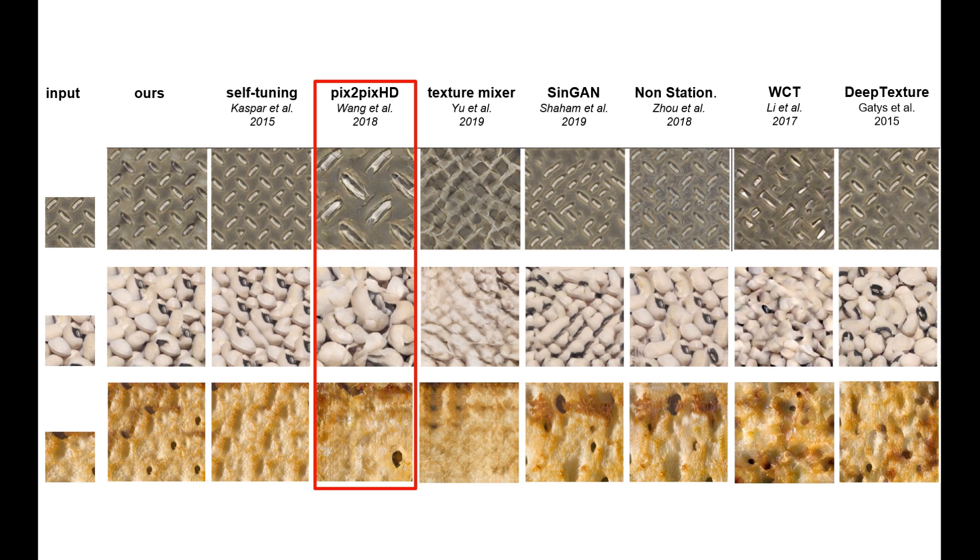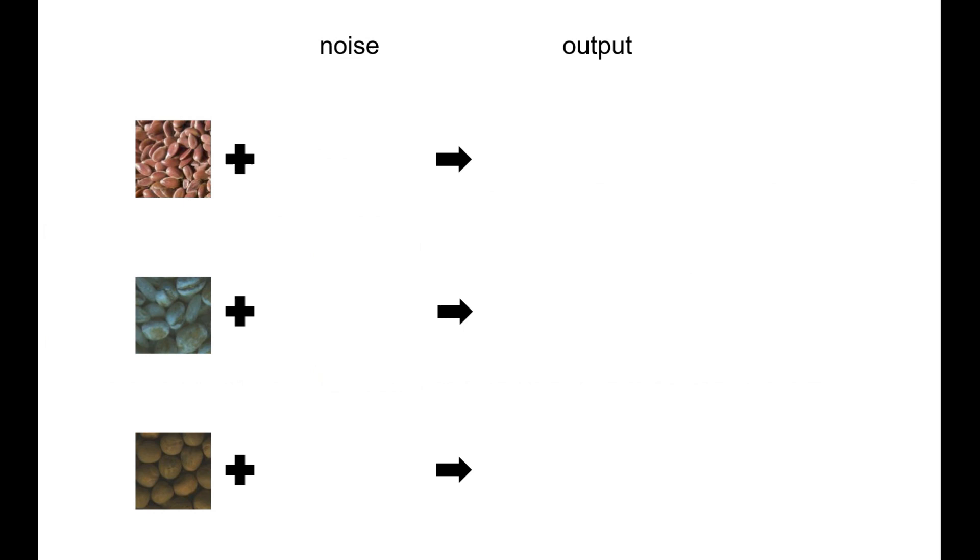On the other hand, we found that the conventional learning-based image-to-image translation networks, such as Pix2Pix and Pix2PixHD, simply enlarge the input rather than perform reasonable synthesis.